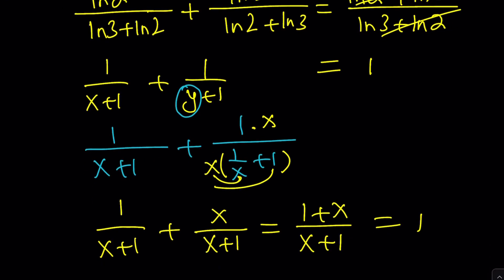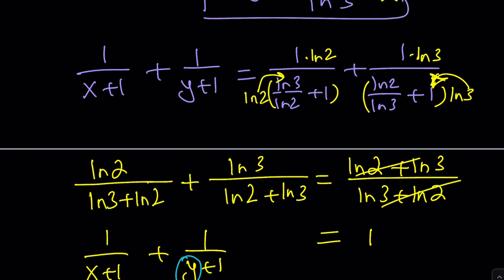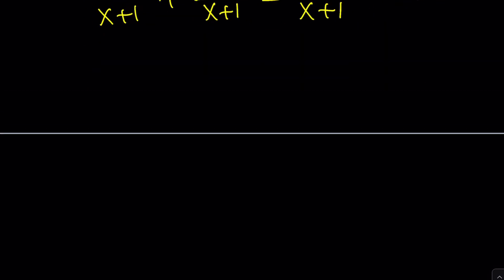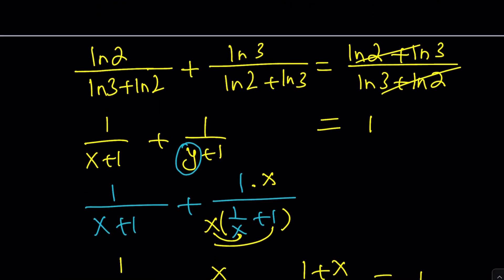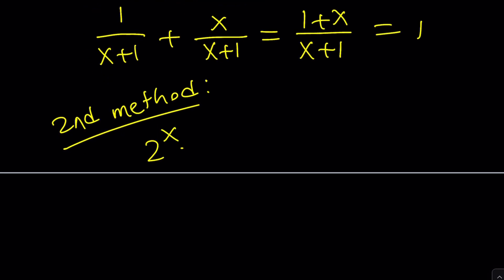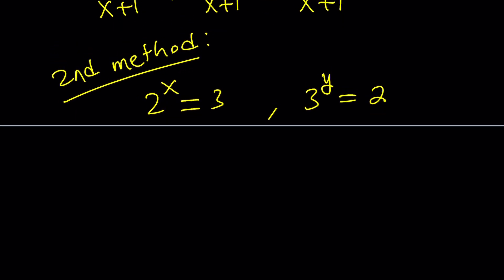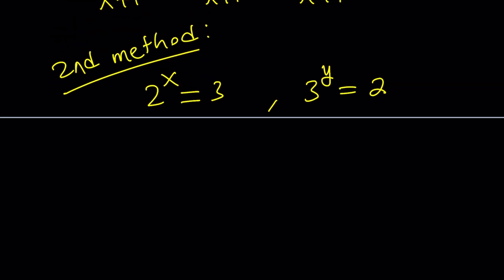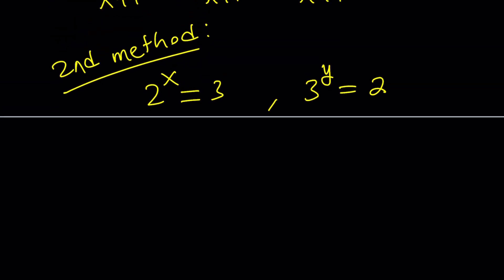Now let's go ahead and take a look at the second method. The second method does not use logarithms. So if you're new to logs and don't want to use them, that's totally fine and understandable — you can use this method. You can stick with exponentials: 2 to the x is 3, and 3 to the y is 2. This just takes a little bit of tweaking to get what we want, but it's doable.